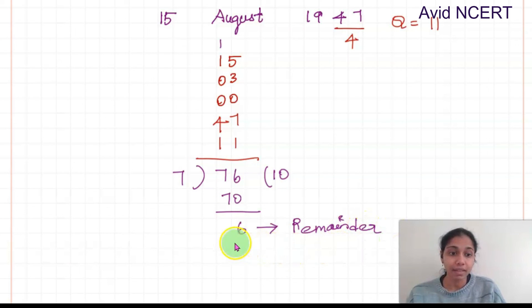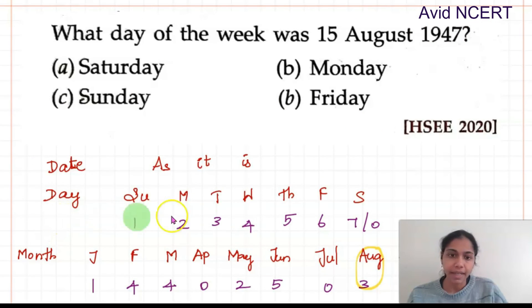Now this is the code which gives us the day. So 6 under the day section. The code 6 goes for Friday. Therefore what day of the week was 15 August 1947? It was on Friday.